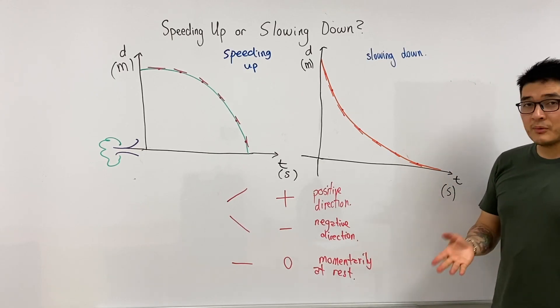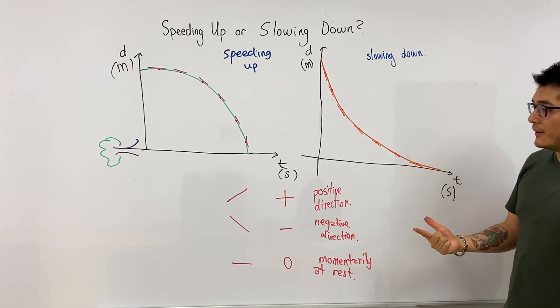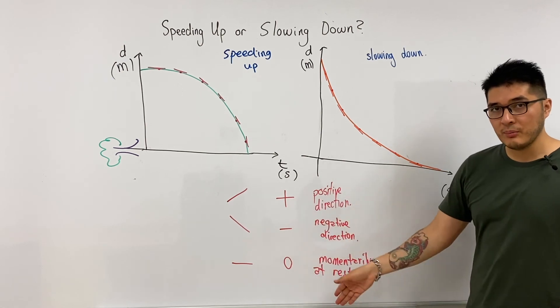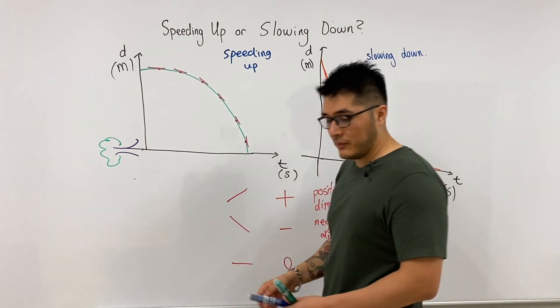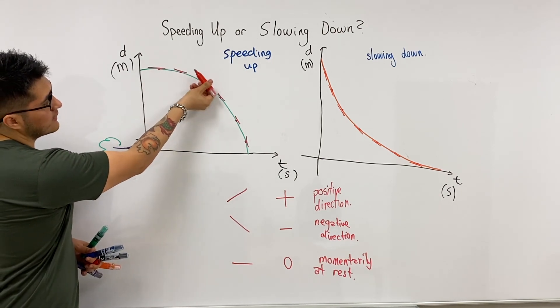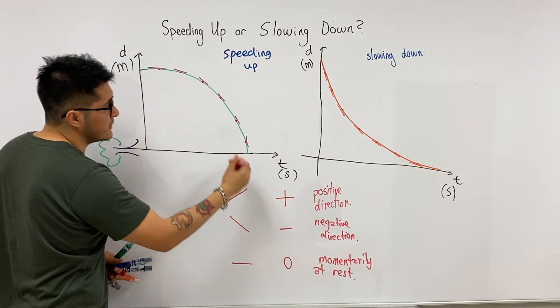So again, to describe motion, we need two things: type of motion and directional motion. Now to get the directional motion, we have to look at the sign of the slope and use our slope legend here. So let's go back to the first graph. In this case, it is bending to the left, so let me say it has a negative slope.